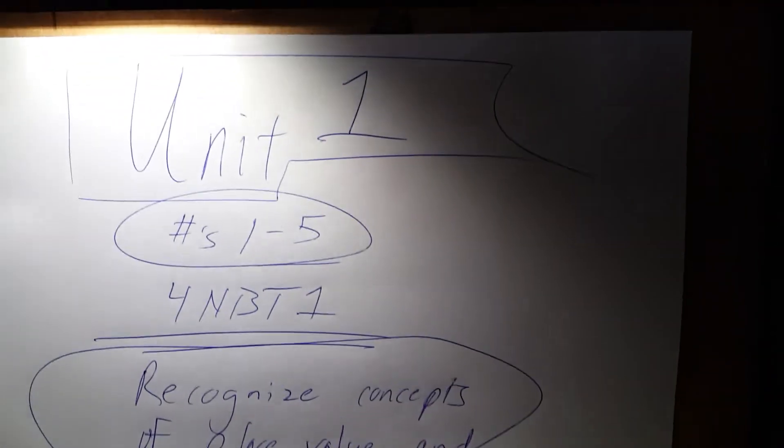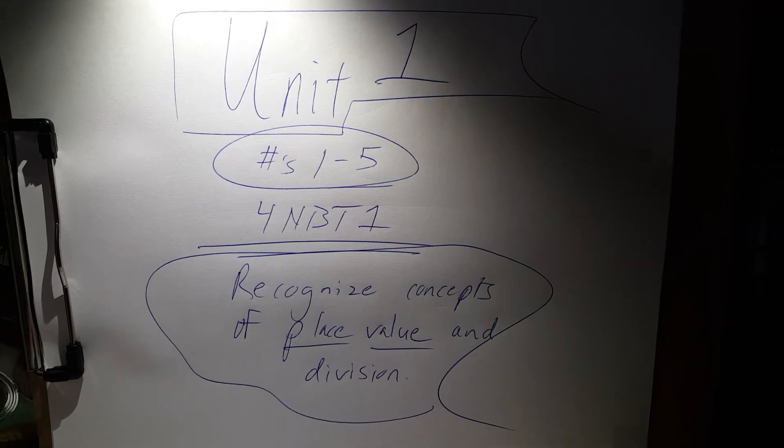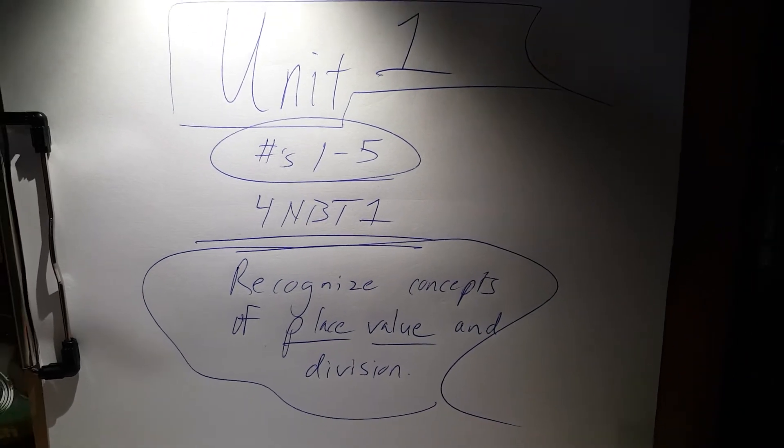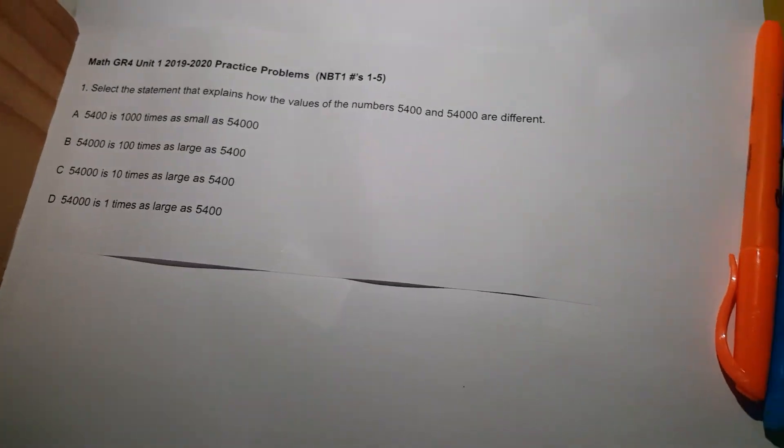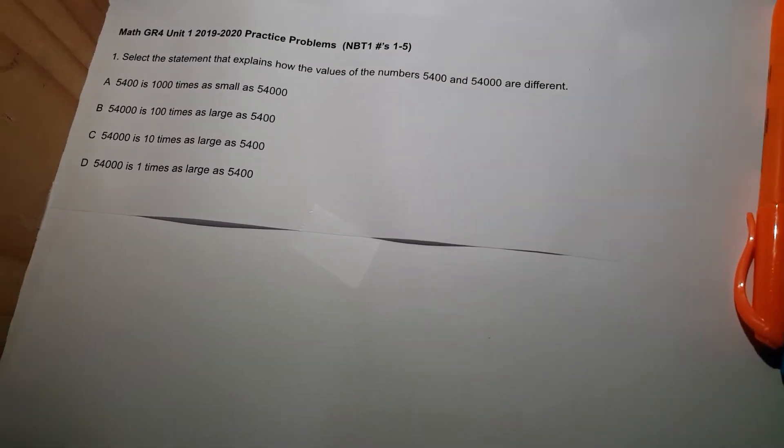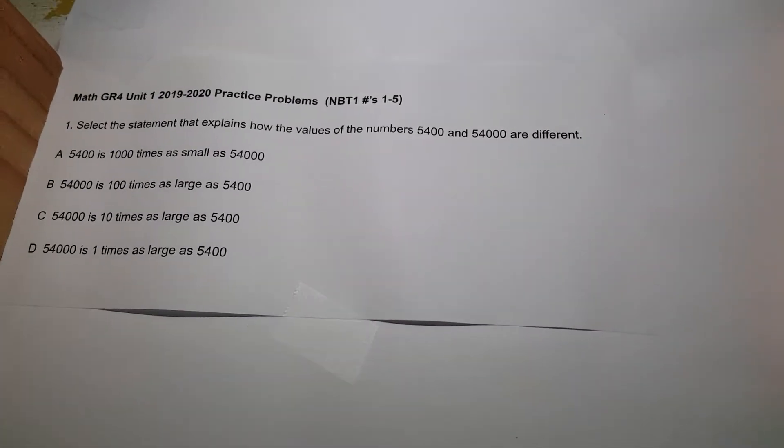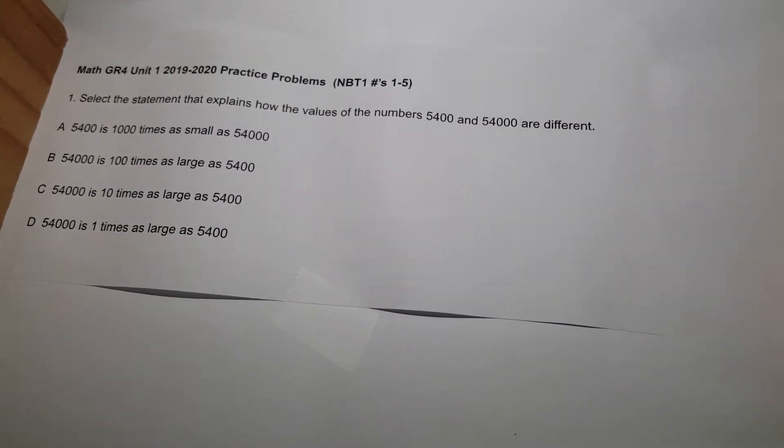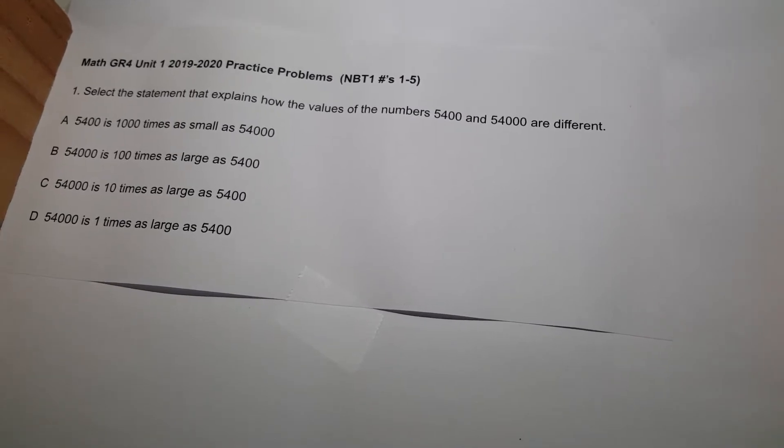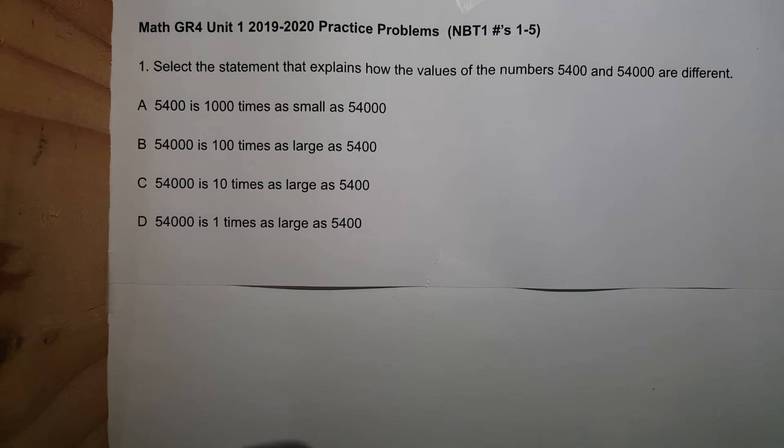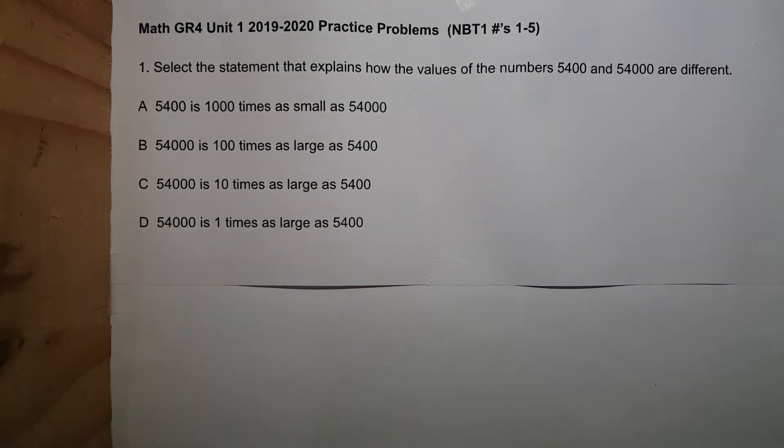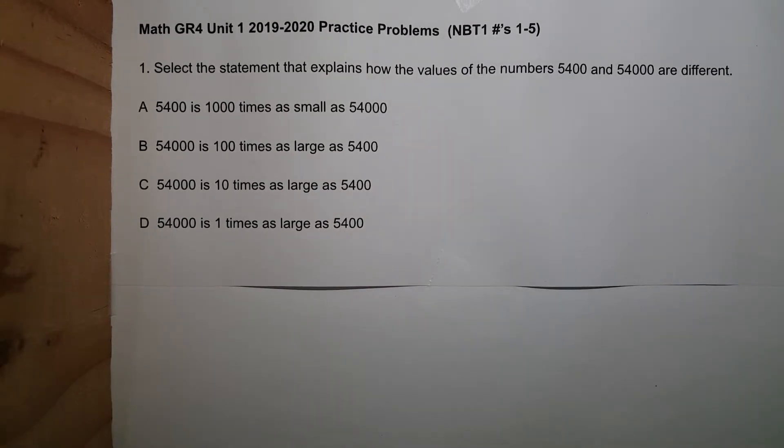We are going all the way back to Unit 1, numbers 1 through 5 for NBT1: recognize concepts of place value and division. For students who are gone next week due to the coronavirus, today is March 15th, 2020. I am going to go over all of the questions way back that we did in July, August and September. The end of the year is wrapping up anyway, so it's time to review what we did all year.